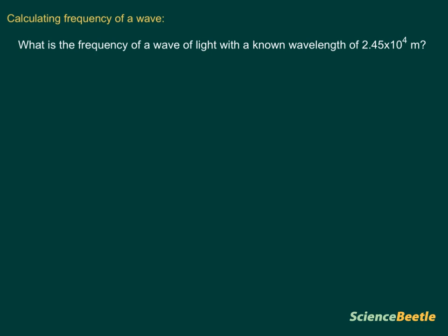what is the frequency of a wave with a known wavelength of 2.45 times 10 to the 4th? Key words that tell you that you know something is one of them right here, known. So what do you know? You know the wavelength, and that wavelength is 2.45 times 10 to the 4th meters.